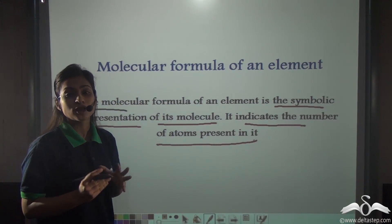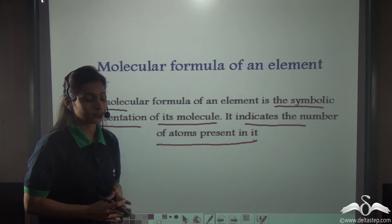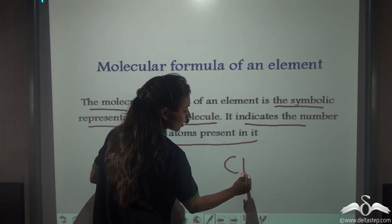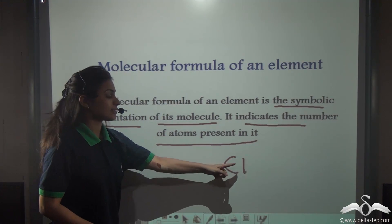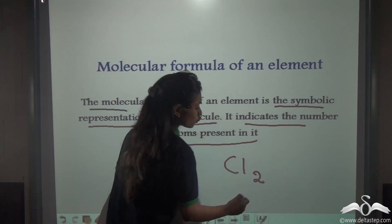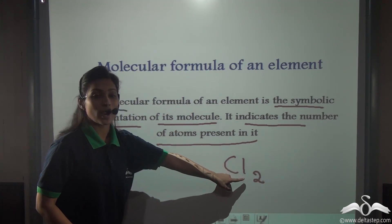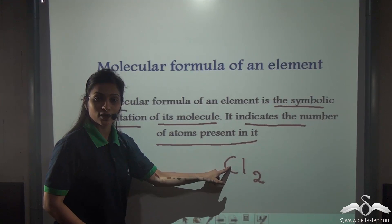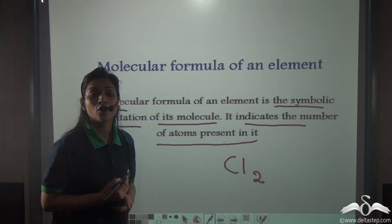For example, what is the symbol of chlorine? It is Cl, but we do not write Cl like this. We always represent chlorine as Cl2. This means that two atoms of chlorine combine together to form one molecule of chlorine.